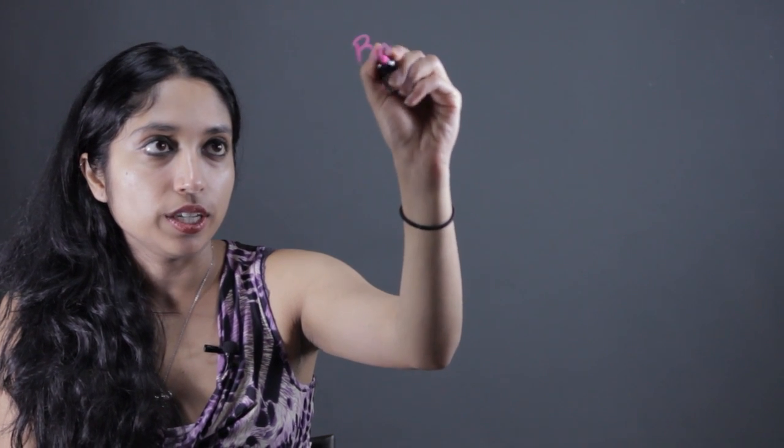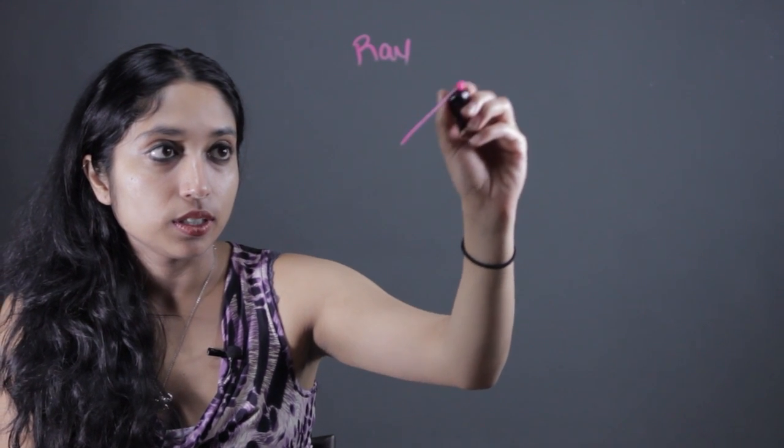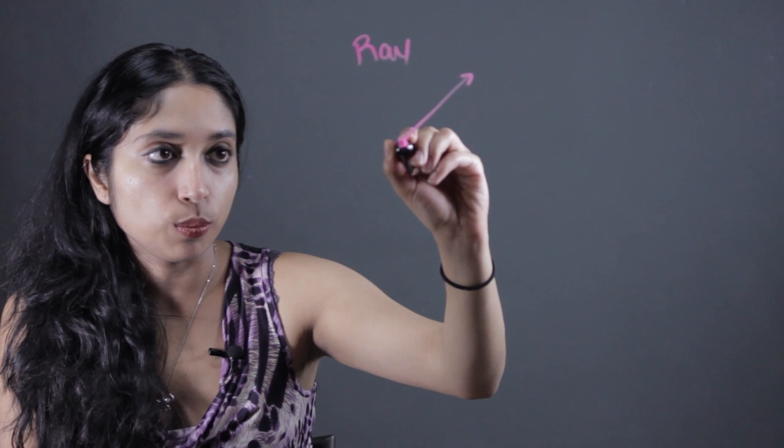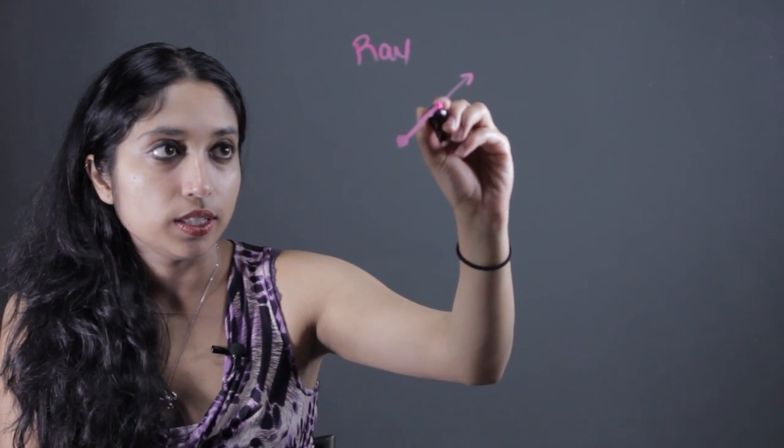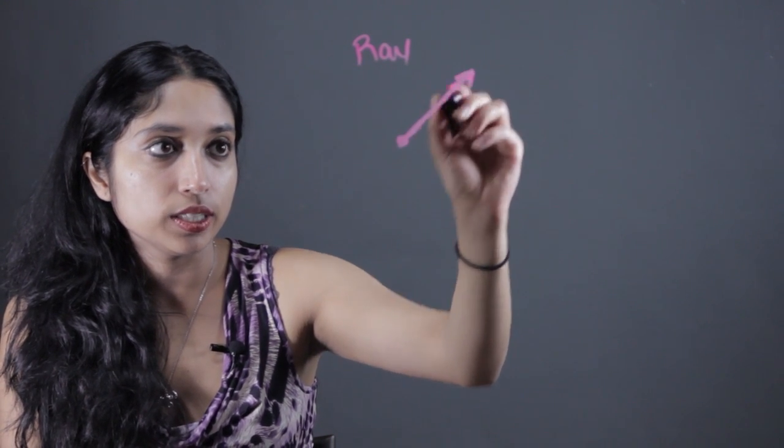So a ray, let's start here, is a line that goes on forever and starts at a specific point. So it starts at a point and then extends infinitely in one direction. This is what a ray is.